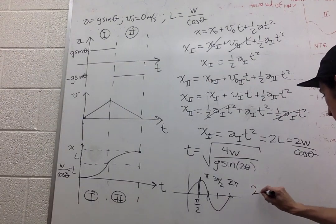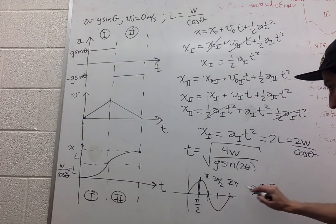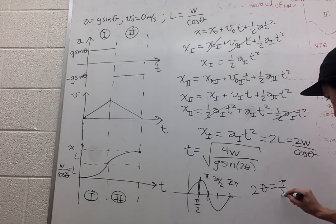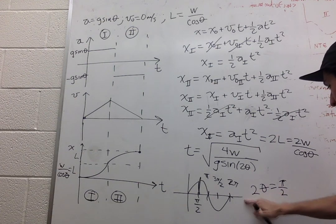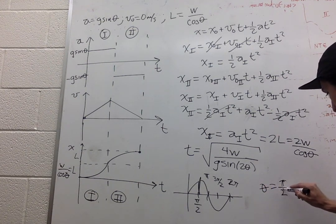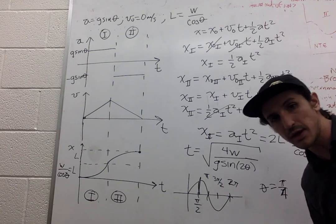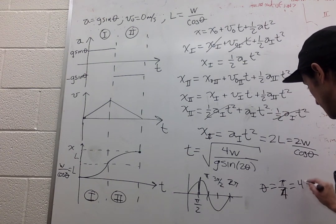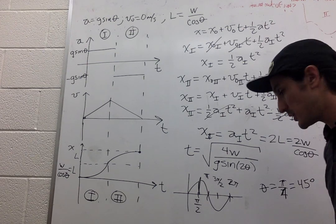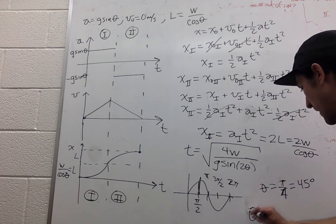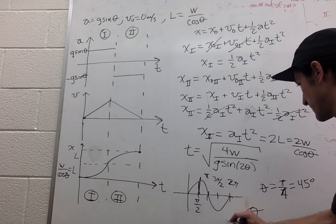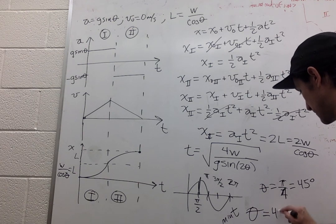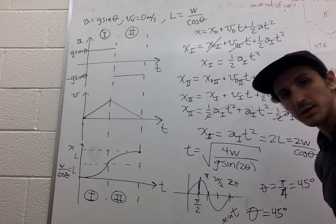So we want 2 theta to be equal to pi over 2. This implies that theta is pi over 4, which is equal to 45 degrees. So the angle that minimizes time is 45 degrees.